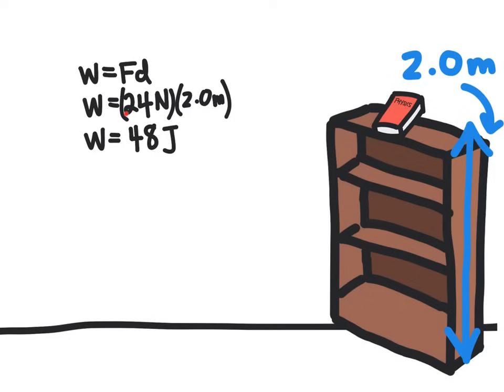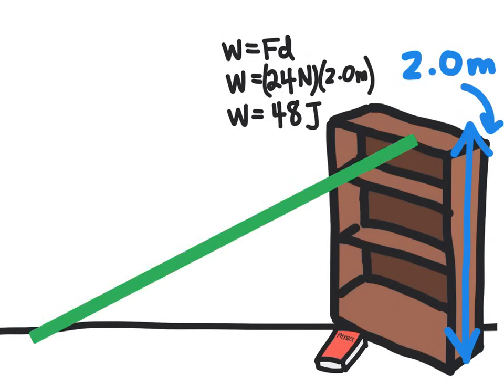Now let's say that you were not strong enough to apply 24 newtons. No matter what you could do, you could not apply that force, and so you couldn't lift that book. This is where our machine comes in. So now we bring in our inclined plane, and we can push the book along the inclined plane and get it all the way up here to the top of the bookshelf.